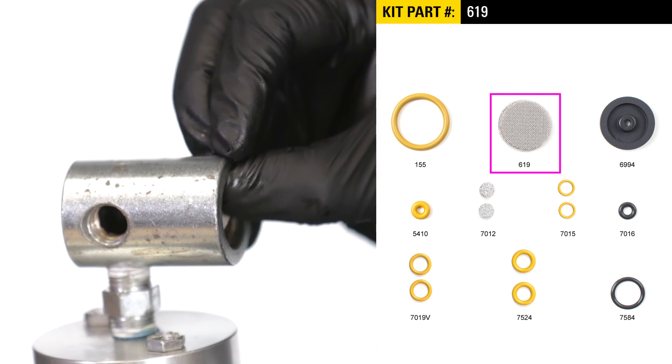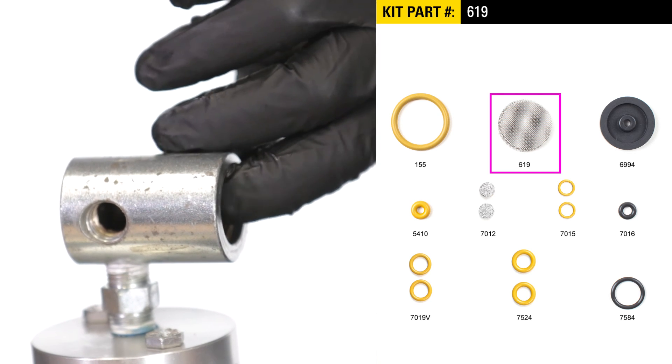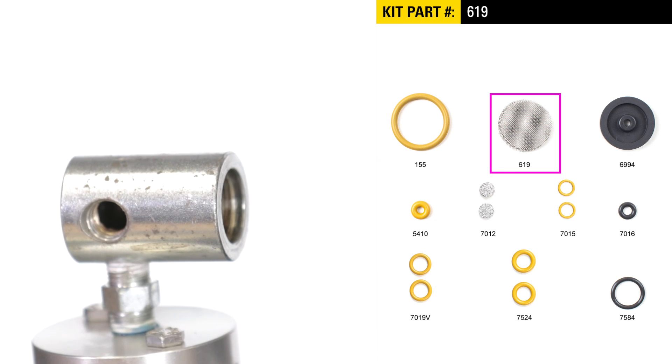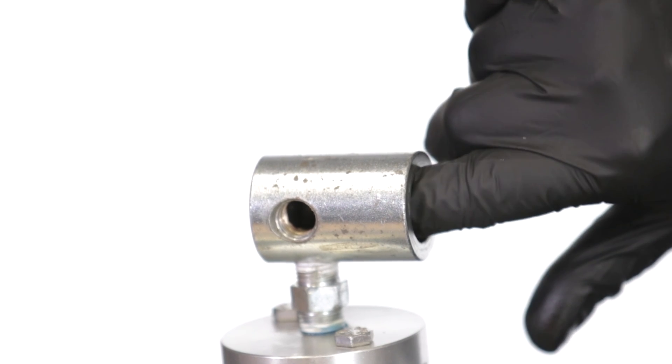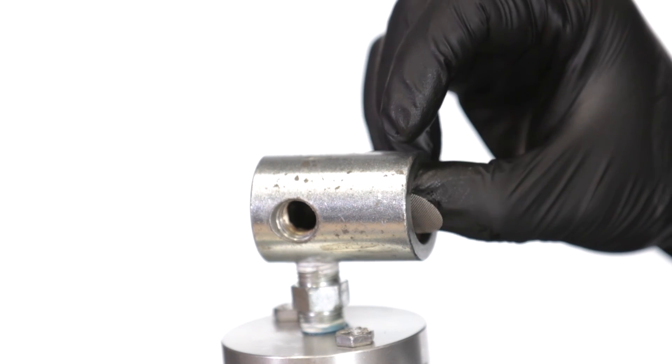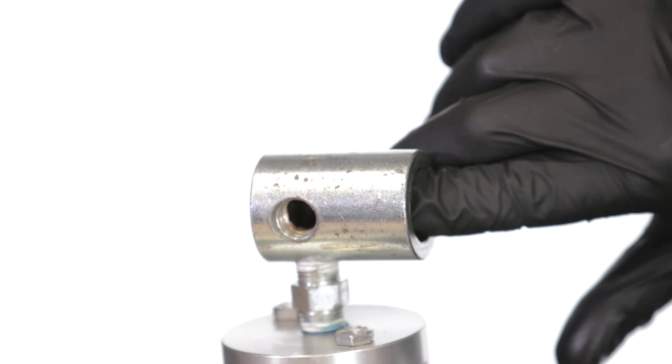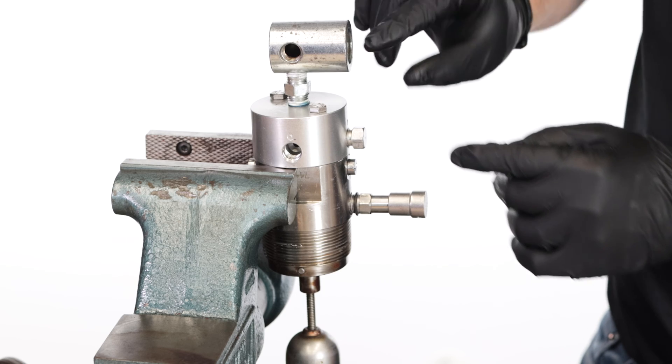Install the six 619 filter screens. These can all be installed at once or individually. There is a slight rolled edge on each screen caused by the punch used to cut them. Insert these so the rolled edge is facing up and verify that the screens are resting on the inside shoulder.